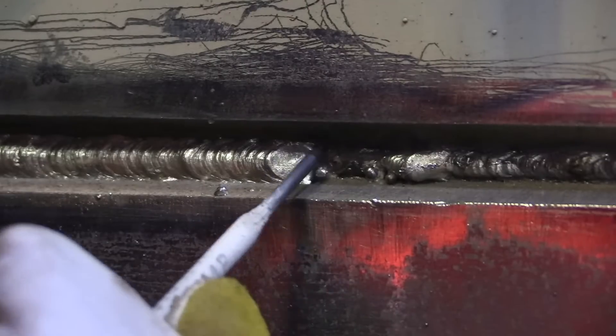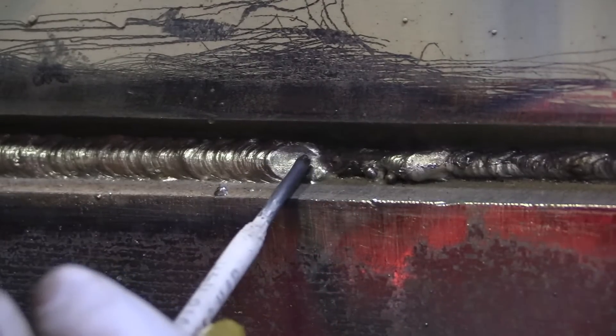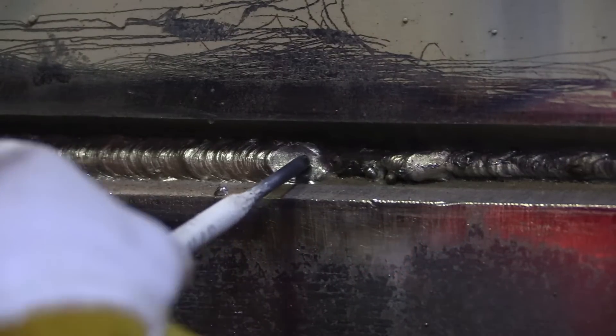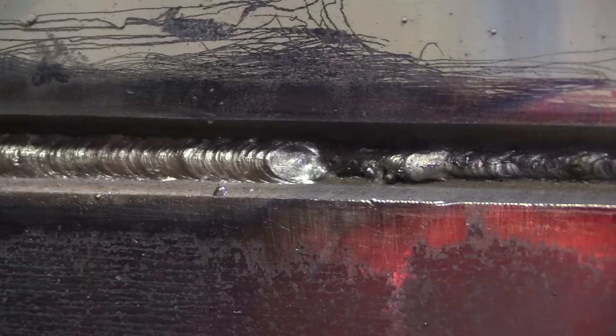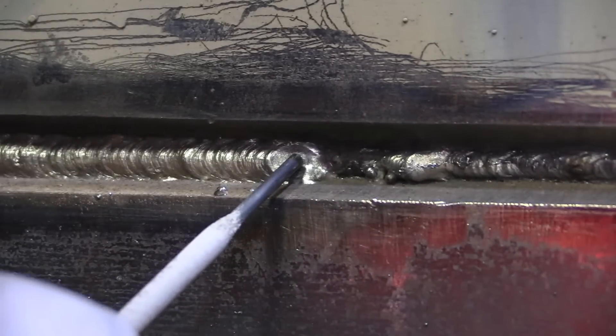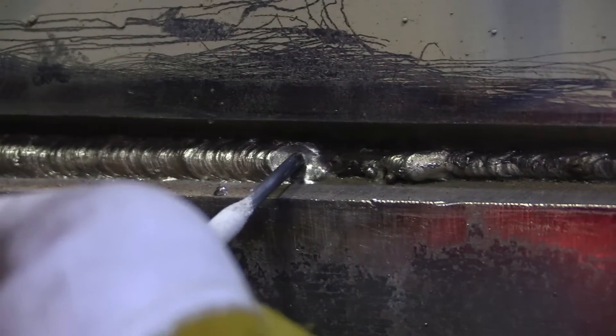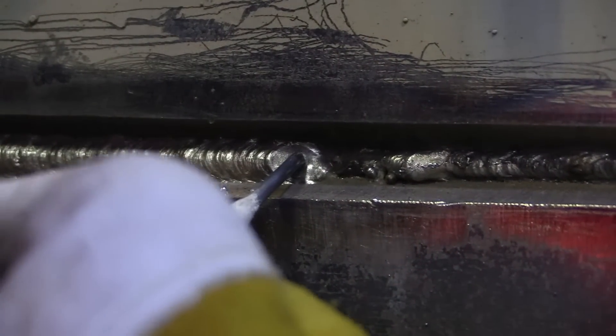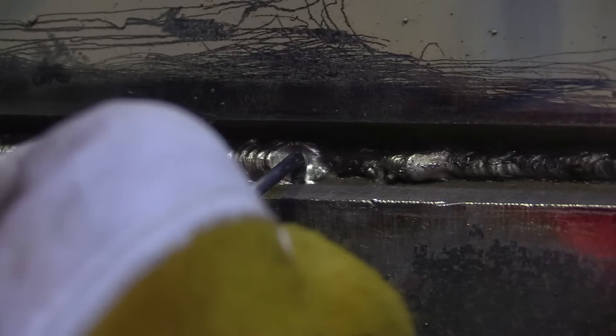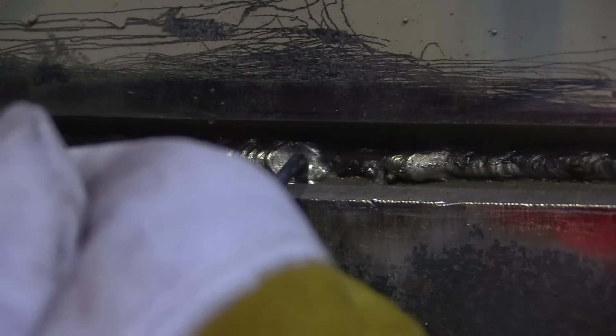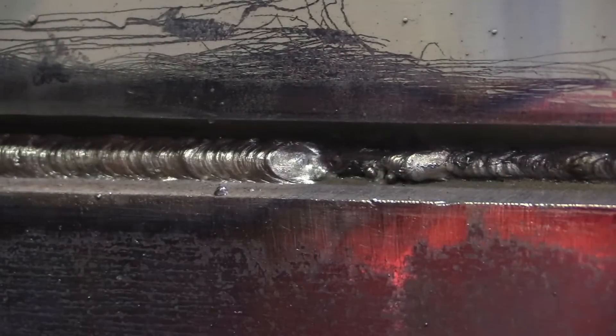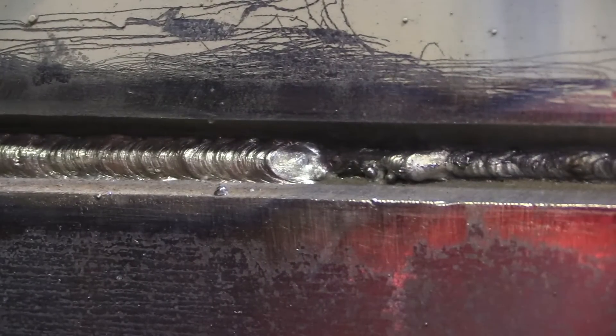So this right here is our weld crater. And at the center of this weld crater, that's where our electrode was when we stopped welding. So our goal here is to come back into this crater as close to the center as possible we can get. And we want to let that crater just refill. We don't want to gobber up the metal on there. We just want that crater to refill. And then we can resume our welding the rest of the way through here.